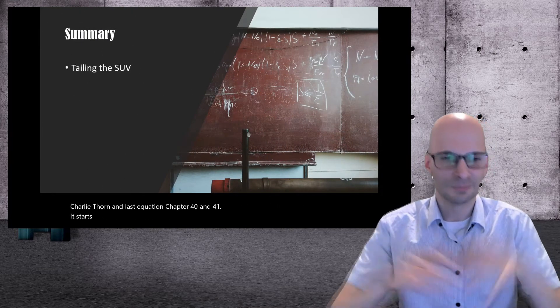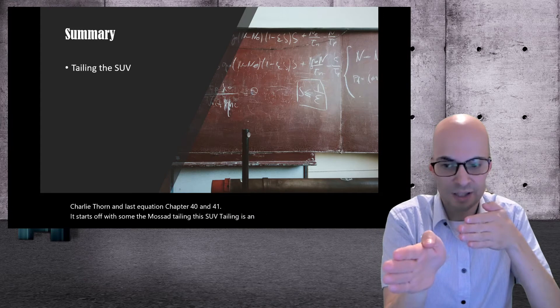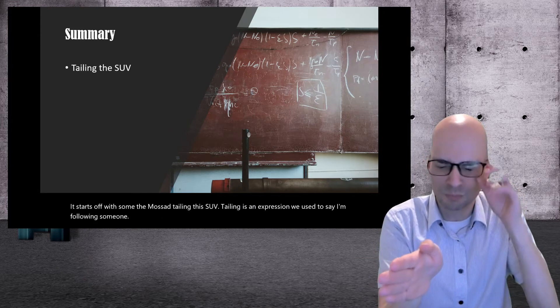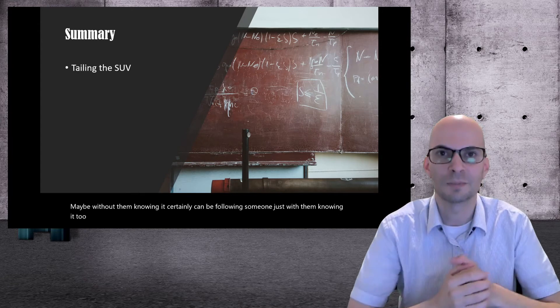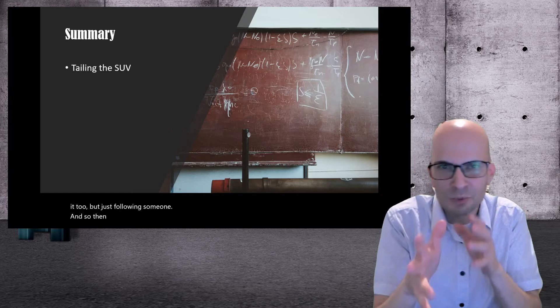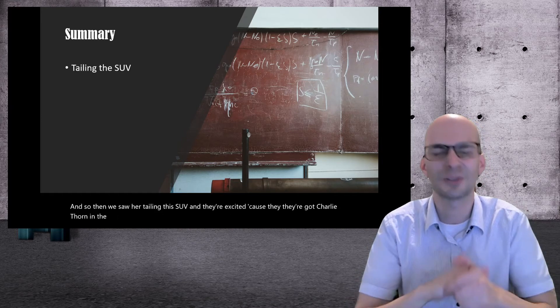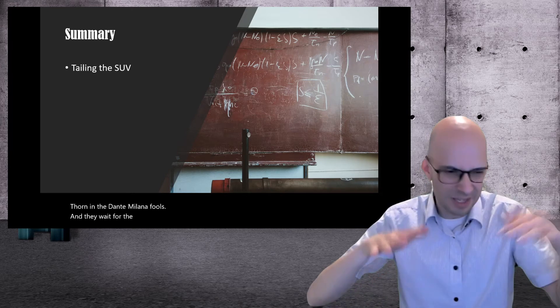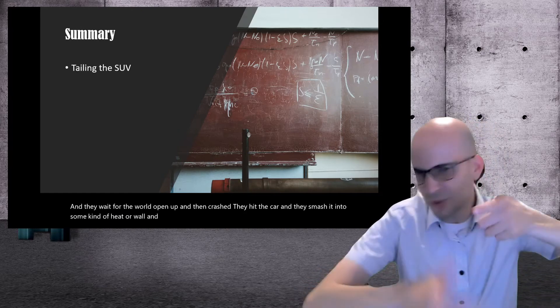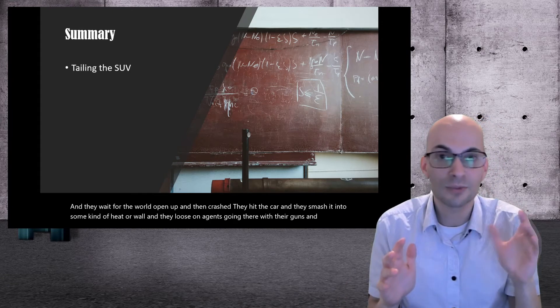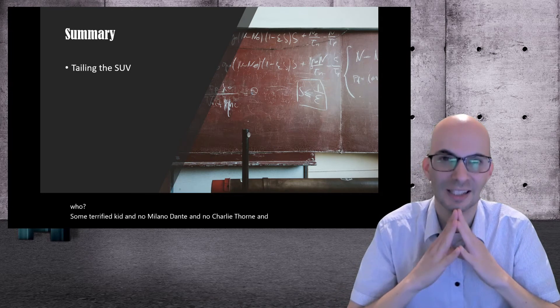It starts off with the Mossad tailing this SUV. Tailing is an expression we use to say following someone, maybe without them knowing it. The Mossad are tailing this SUV, and they're excited because they've got Charlie Thorne and Dante and Milana, the fools. They wait for the road to open up, and then crash. They hit the car and smash it into some kind of heap or wall. The Mossad agents go in there with their guns, and there's just some terrified kid. No Milana, no Dante, and no Charlie Thorne. And Samuel is angry.